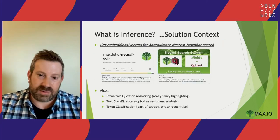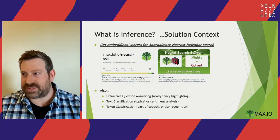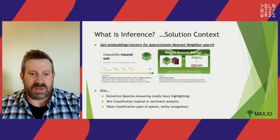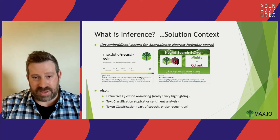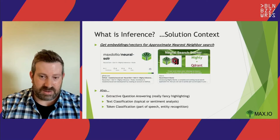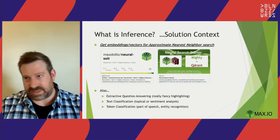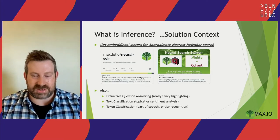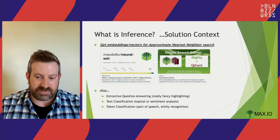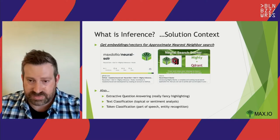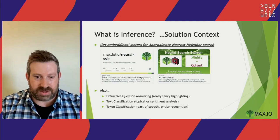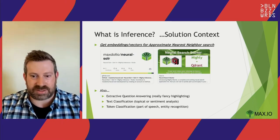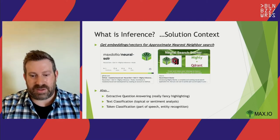So, what are we talking about when we talk about inference and low latency? The solution context I'll cover today is primarily around getting embeddings or vectors from a model, then using those vectors to index them in an approximate nearest neighbor search index. At query time, when somebody types in a text query, you infer vectors from that query and run a similarity search with the approximate nearest neighbor vector search engine. Some examples include Alessandro Benedetti's talk about vector search in Solr, and there's a starter kit using some of the tools I'll show today, called Neural Solr.